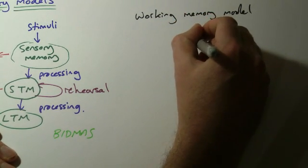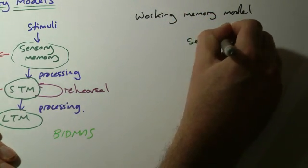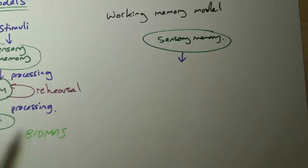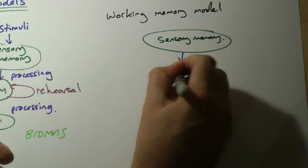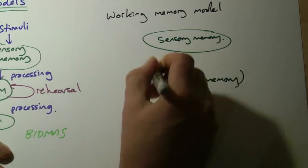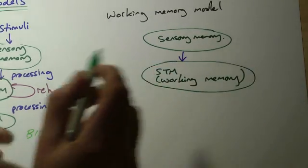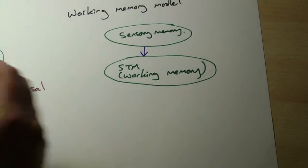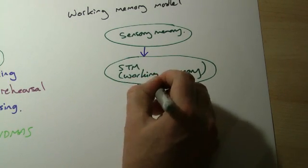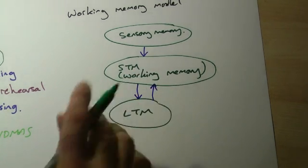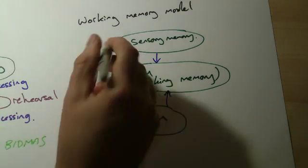Except that in this case the short-term memory now becomes something called working memory. So let's just use this same idea. Again, we've got lots of stimuli coming in. It then passes into our short-term memory or what we might now call working memory. And the idea with this bit is similar to before where we had things going into our long-term memory. And of course, we can still lose bits of information at every step of this.